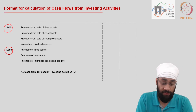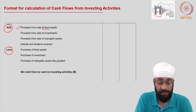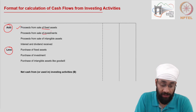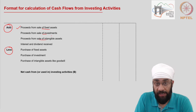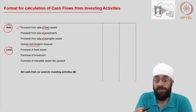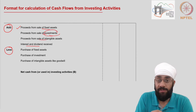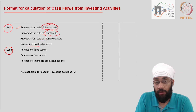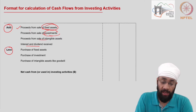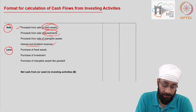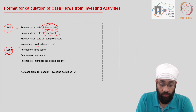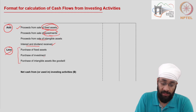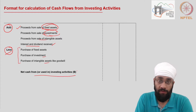The inflows can result from proceeds from the sale of any fixed assets, any investments being sold by the company, any sale of intangible assets, or any income received on the financial investments made by the company. There is also the possibility that a company gives out its fixed assets on a rental or lease basis, and any income received can be shown here. The outflows of cash from investing activities will include the purchase of various fixed assets, any financial investments, or any intangible assets, and then you have the net cash resulting from investing activities.